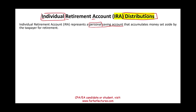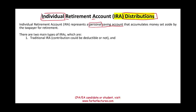What is special about an IRA? Well, it's a vehicle to save for your retirement. We have two types of IRAs: we have a traditional IRA and a Roth IRA.